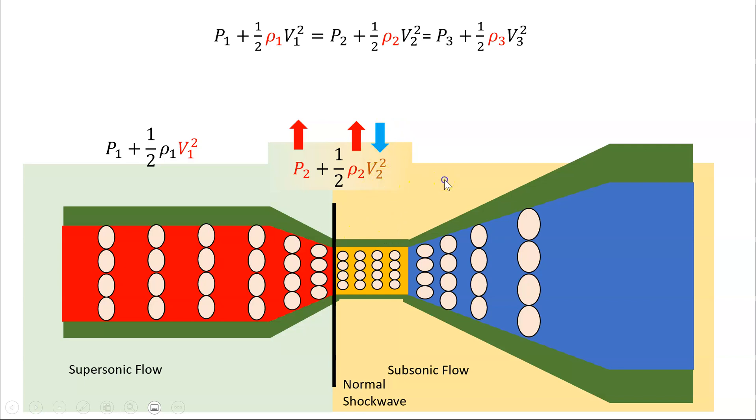So if we're in subsonic flight, then as the area increases, the velocity decreases. So as we go out this side of the duct, then the velocity will continue to decrease, and as it decreases, the pressure will increase.